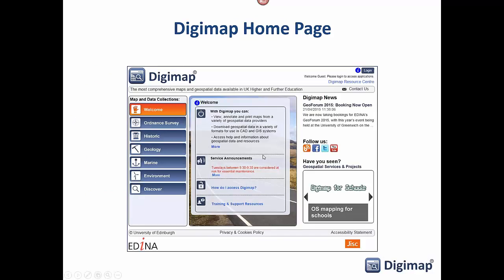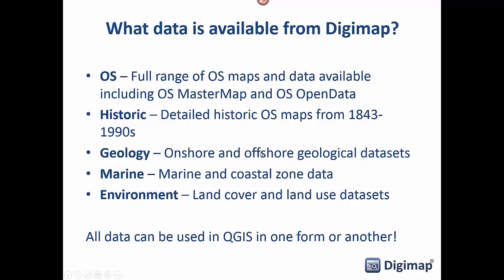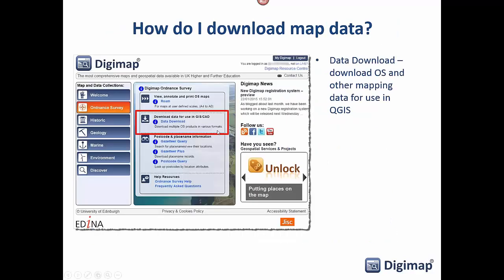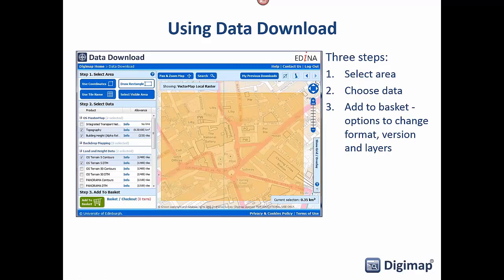Getting data for use in QGIS: we have data available from Digimap in the OS, historic, geology, marine, and environment collections, and all the data can be used in QGIS in one form or another. Each collection has a data download facility. Looking at the Ordnance Survey data download facility, you use a simple three-step process of selecting your area, choosing the data types from the left-hand side, and adding those data products to your basket. It's once they're in the basket that you get to specify things like the format.